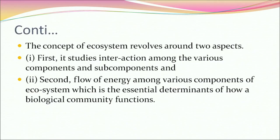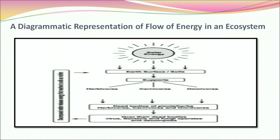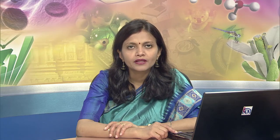The concept of ecosystem revolves around two aspects: first, it studies interaction among the various components and subcomponents; and second, the flow of energy among various components of the ecosystem, which is an essential determinant of how a biological community functions. The functional aspects of an ecosystem include energy flow, food chain, biogeochemical cycle, development and evolution, control mechanisms, and diversity pattern in time and space.